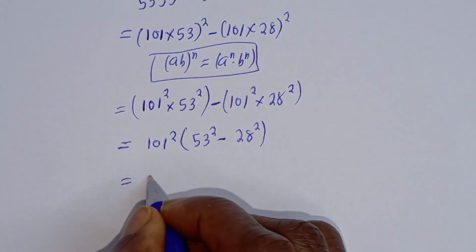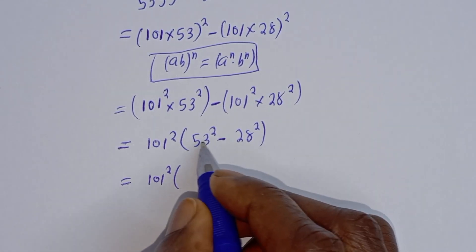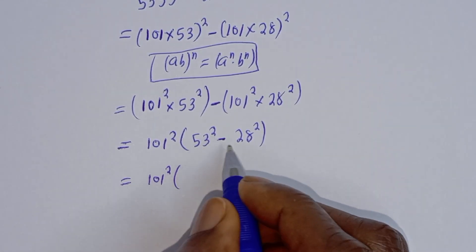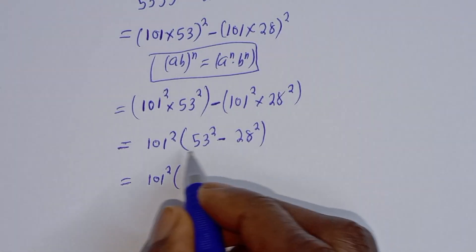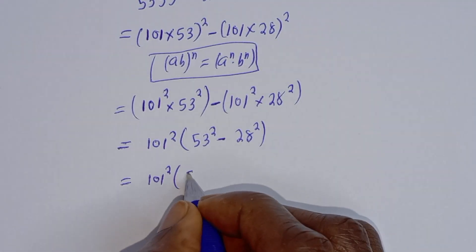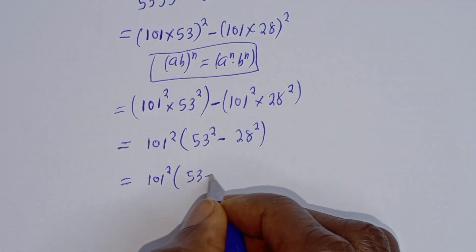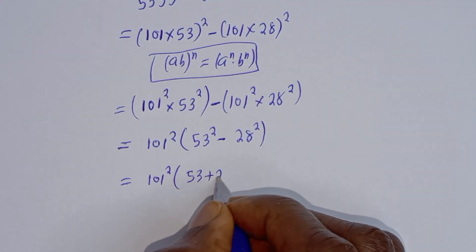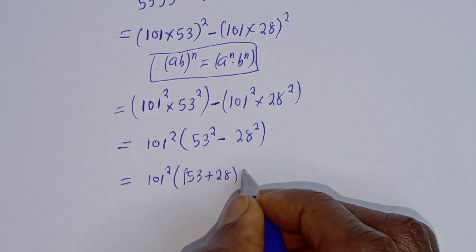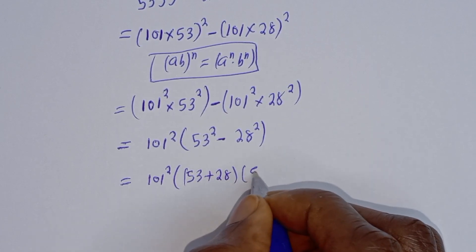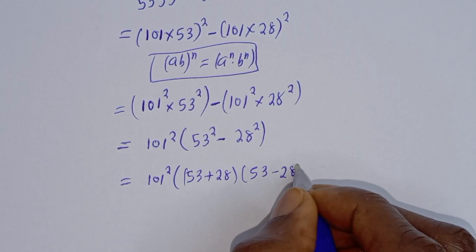Equal to 101 squared bracket: 50 squared minus 28 squared. This is in the form of a difference of perfect squares, and can be written as (50 + 28)(50 - 28).